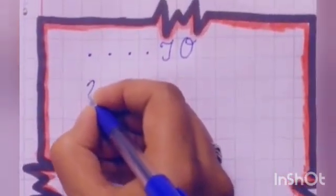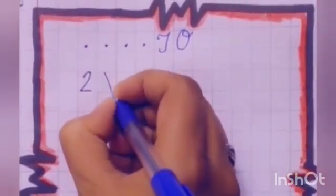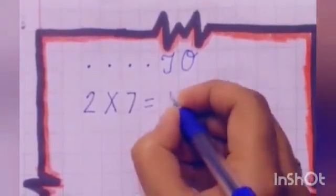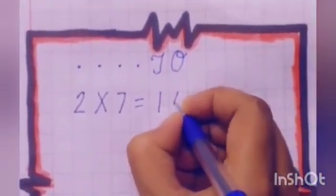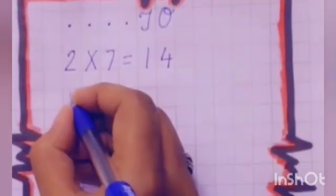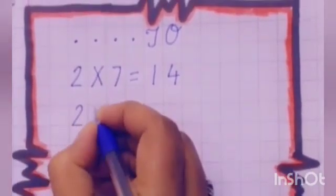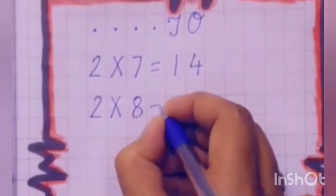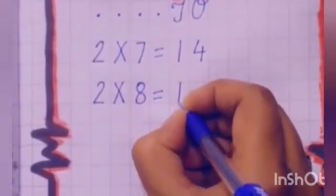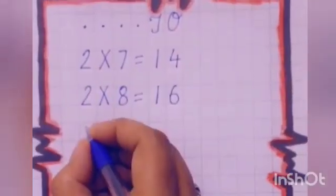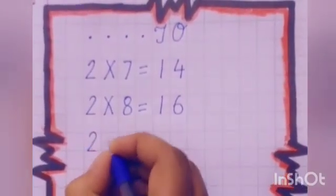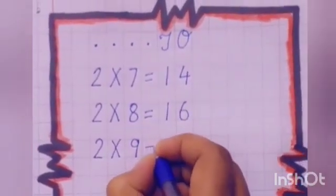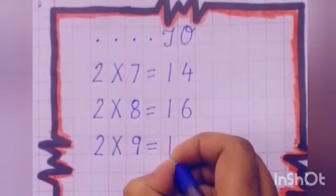2 7s are... 1, 4 — 14. 2 7s are 14. Next, 2 8s are... 1, 6 — 16. 2 8s are 16. Now next is 2 9s are... 1, 8 — 18. 2 9s are 18.